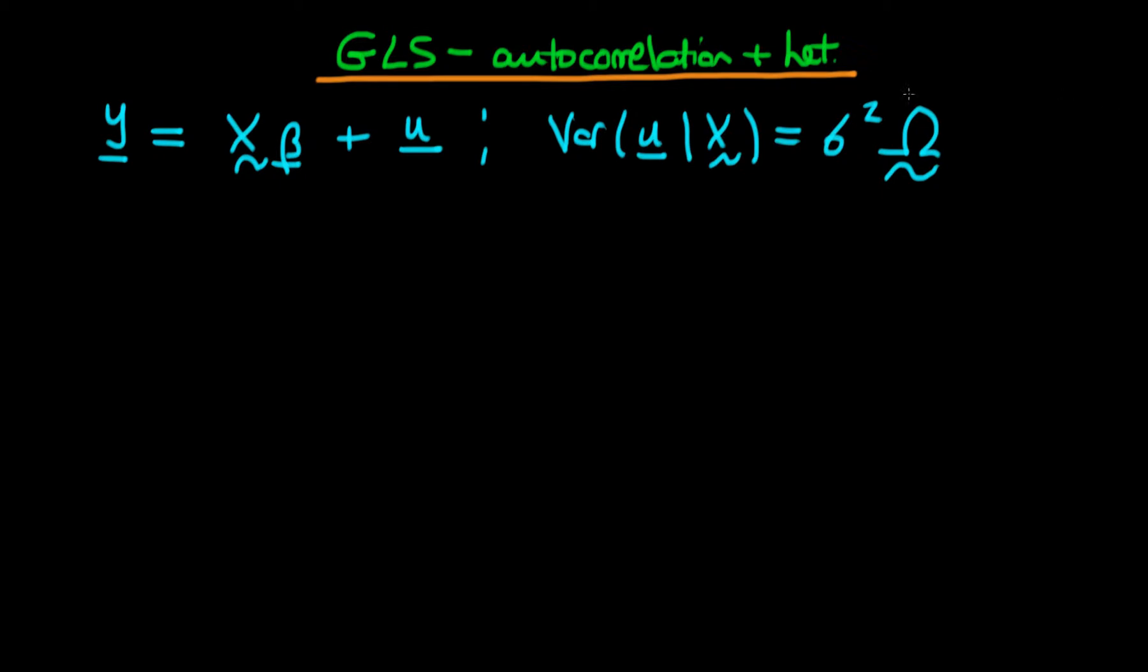And unlike before we're going to not necessarily assume that omega is a diagonal matrix. So we're going to assume that omega has the following sort of structure. So it has omega 1 1 as its first component, omega 2 2 as its second diagonal component, through to omega n n as the last diagonal component.